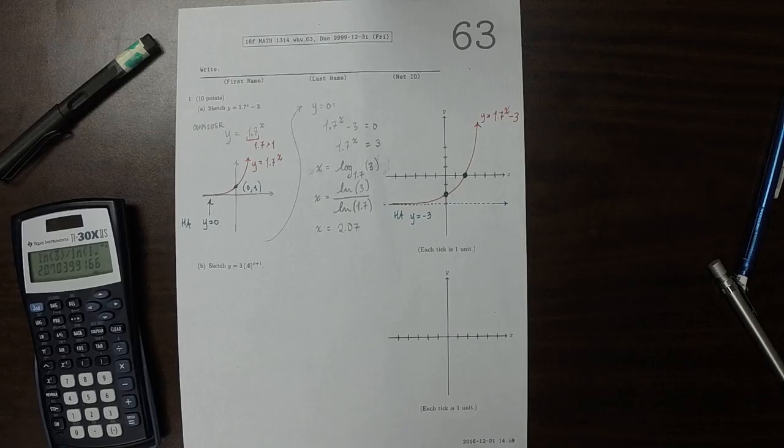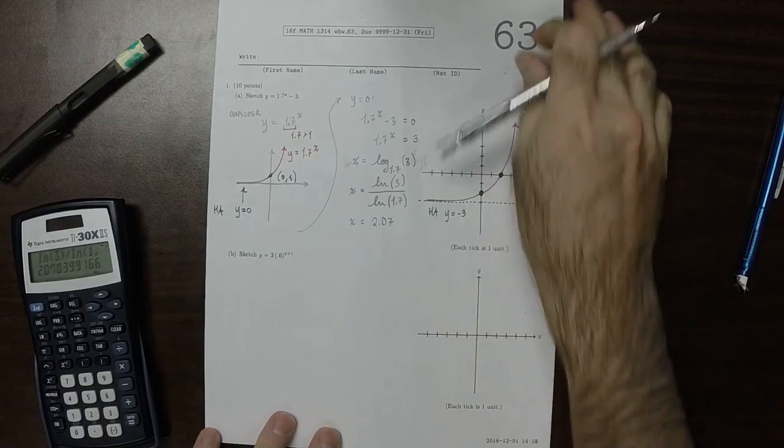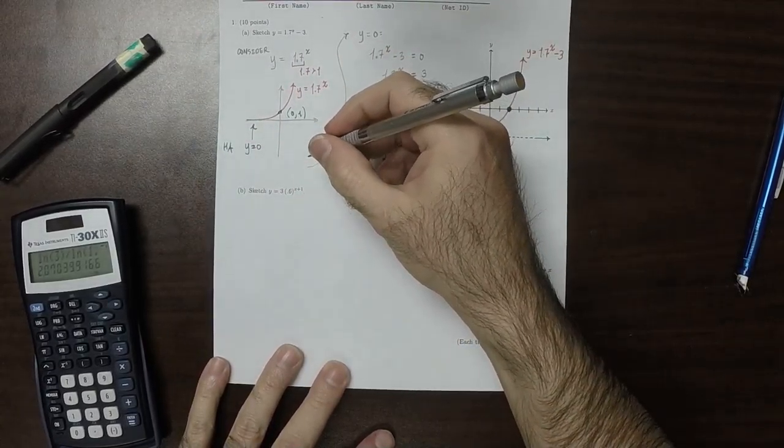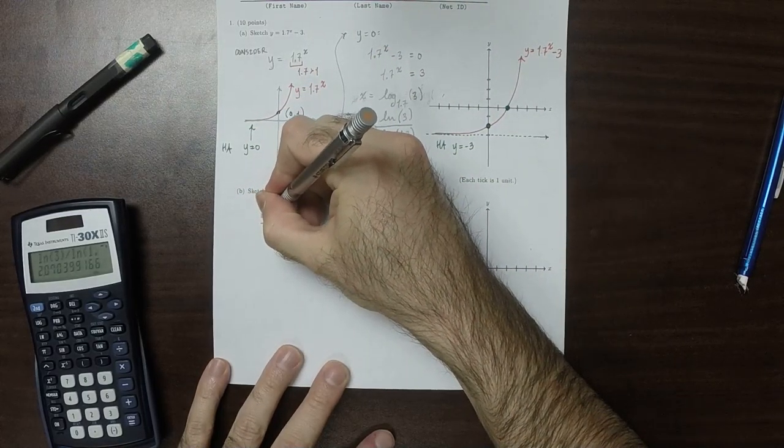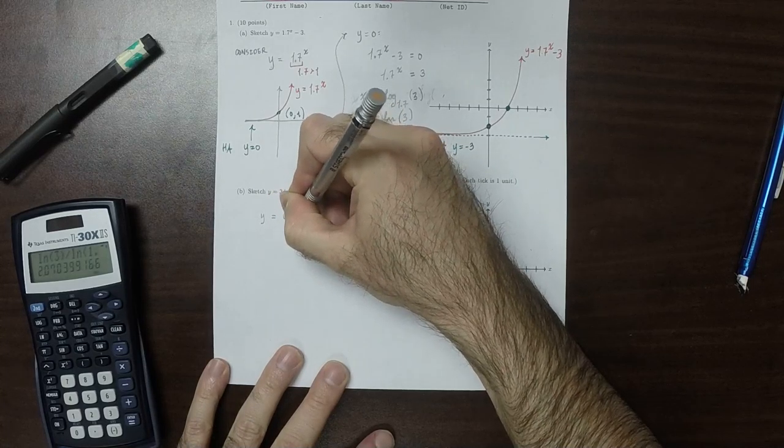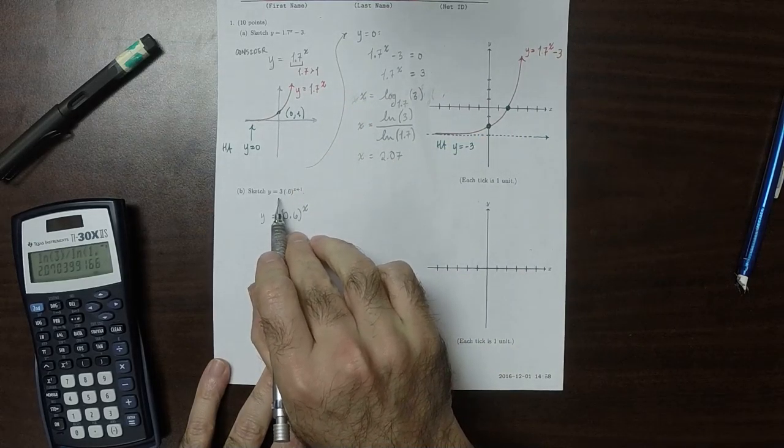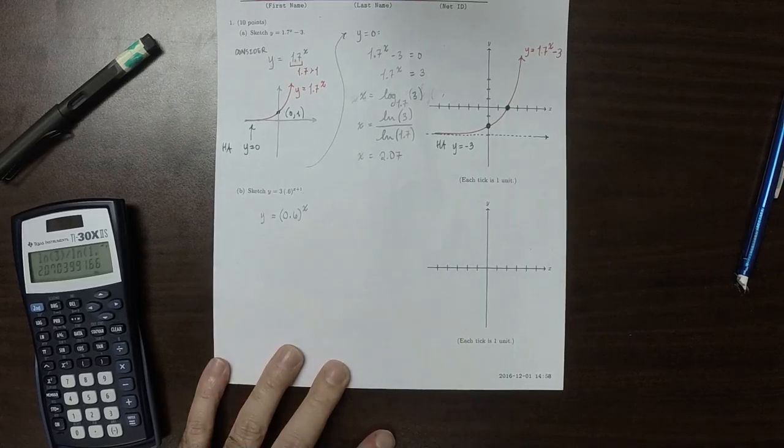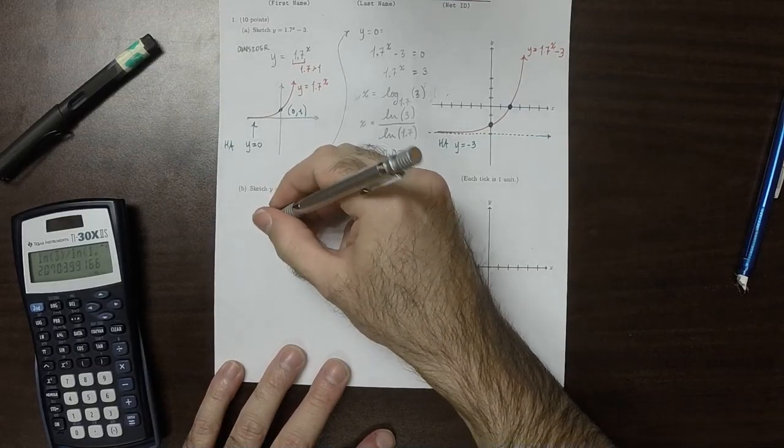Next. So plotting this, so first let's consider the function y = 0.6^x. So that is to say, we're going to forget the 3 for a moment, and we're going to forget the plus 1 for a moment. So plotting this, this one.